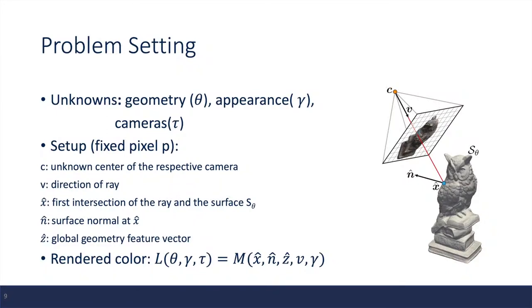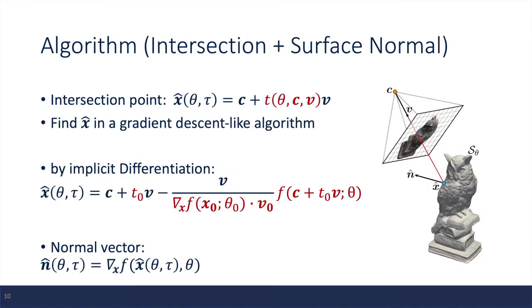And next, I'm going to talk in more details of the different components of M. So first, I'm going to talk about how we're going to find the intersection point. Intuitively, if we keep traveling in the direction of v, we will eventually hit somewhere on the surface. Therefore, the intersection point can be found by using a gradient descent-like algorithm.